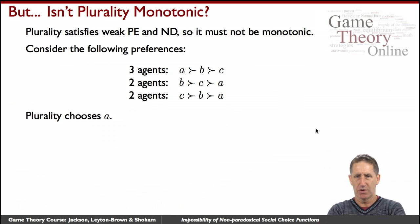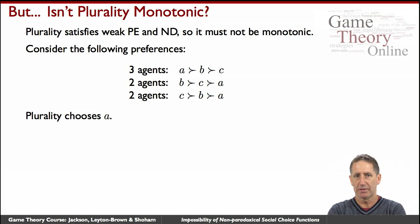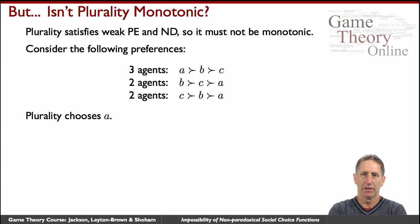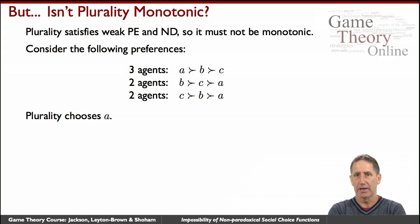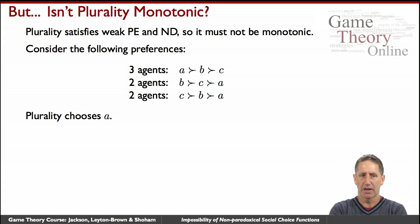Just to test our intuition, let's consider an example and take plurality, which on the face of it might seem to contradict the Muller-Satterthwaite theorem. Clearly plurality is Pareto efficient — if everybody prefers some candidate to another, the weaker candidate will never be chosen. And it's clearly not dictatorial. So the theorem says it cannot be monotonic. Intuitively you might think it is monotonic, but here's a counterexample.